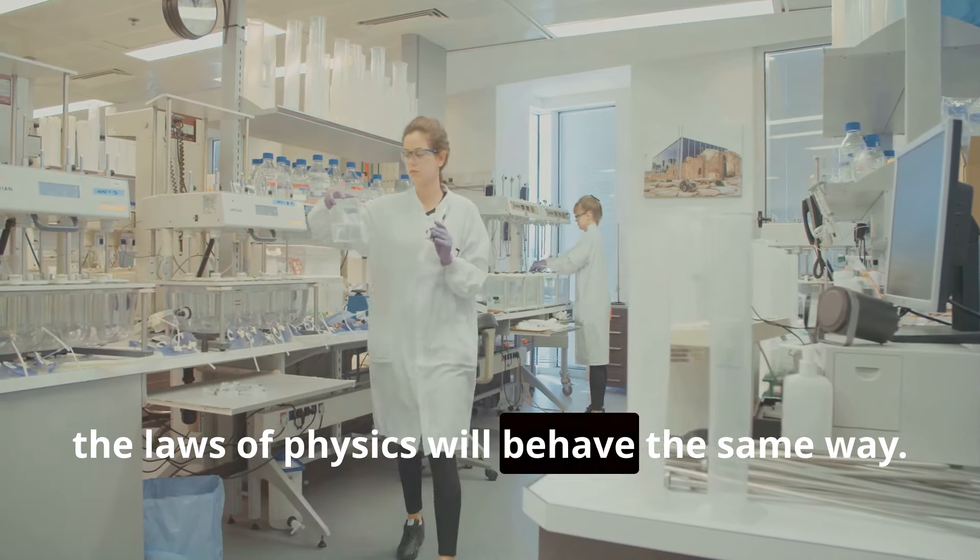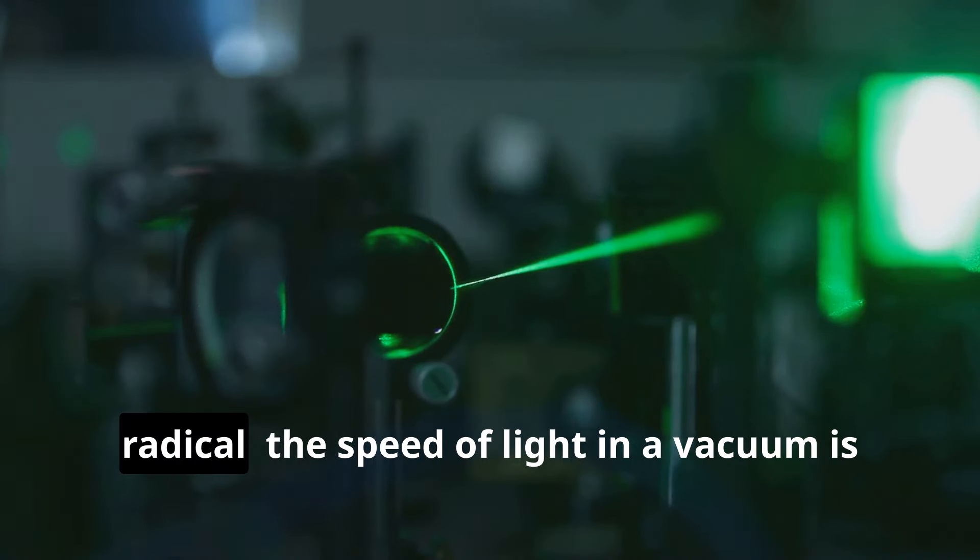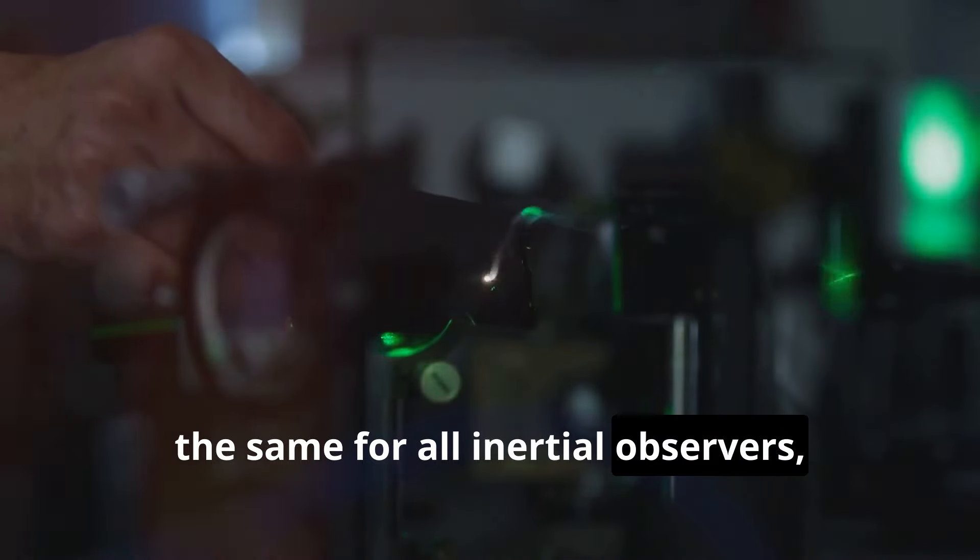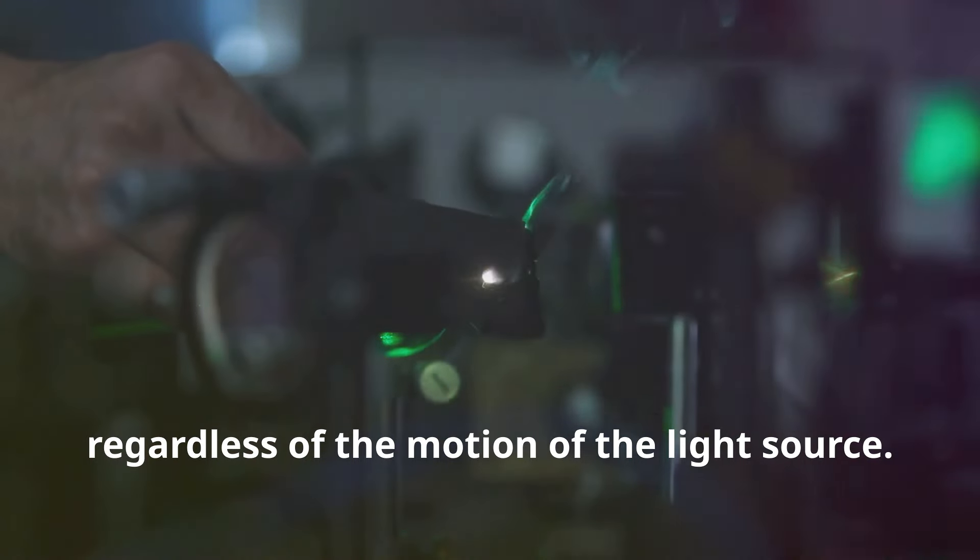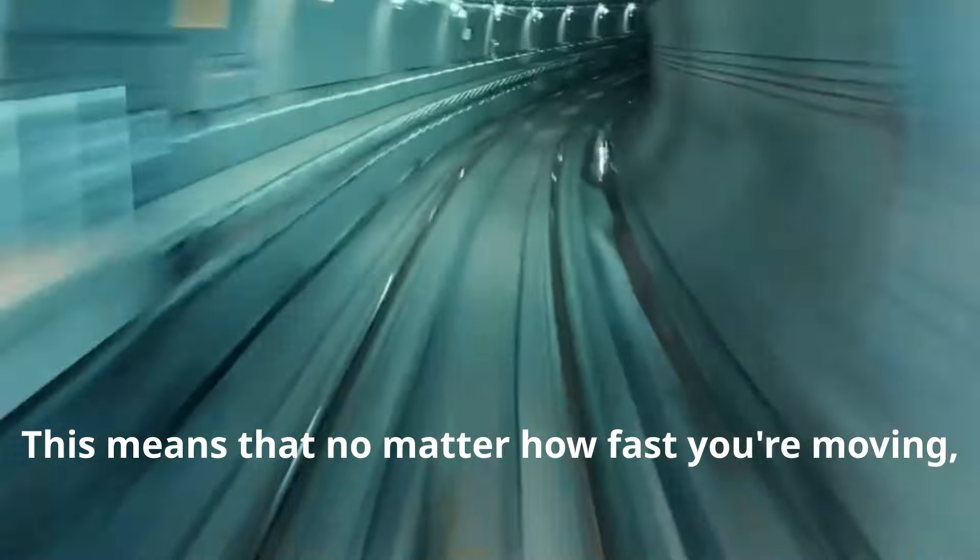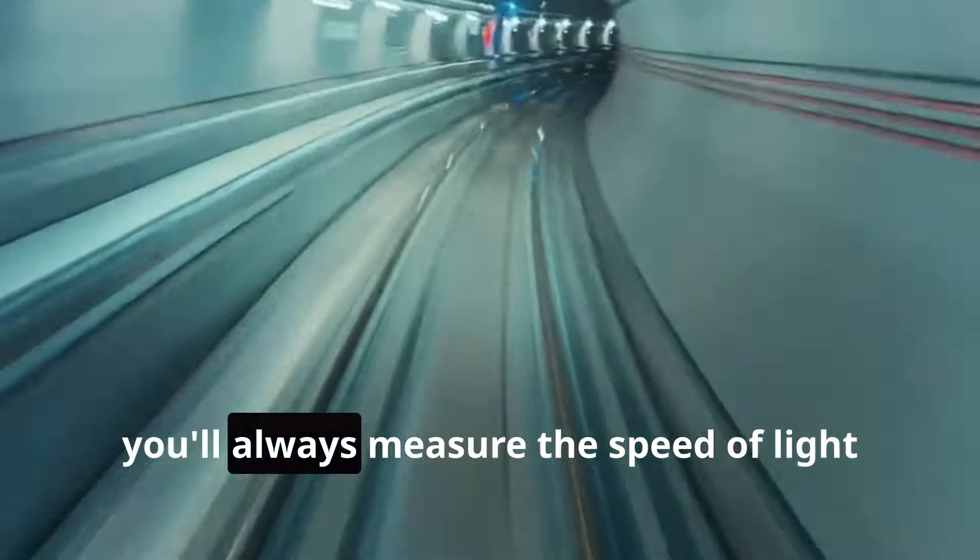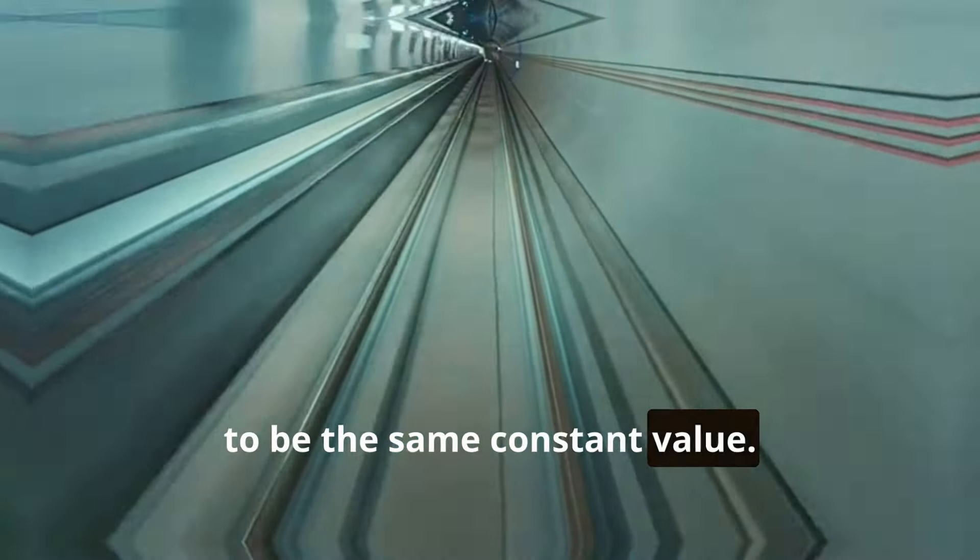The second postulate was even more radical: the speed of light in a vacuum is the same for all inertial observers, regardless of the motion of the light source. This means that no matter how fast you're moving, even approaching the speed of light, you'll always measure the speed of light to be the same constant value.